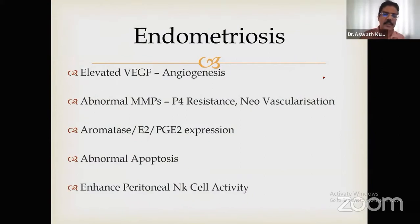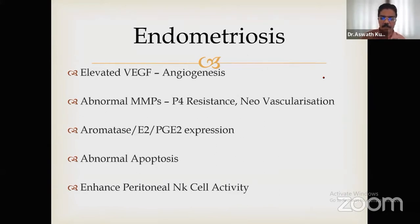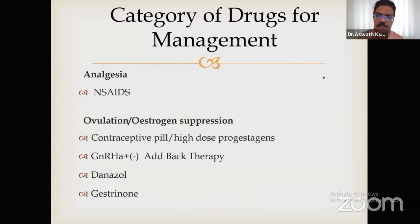This slide is very important for understanding drug mechanisms. Elevated VEGF causes angiogenesis; abnormal metalloprotein causes progesterone resistance and neovascularization; there is overexpression of aromatase, estradiol, and PGE2; abnormal apoptosis; and enhanced peritoneal NK cell activity. Understanding this pathophysiology leads us directly into the categories of drugs we use.